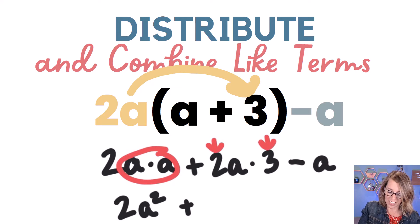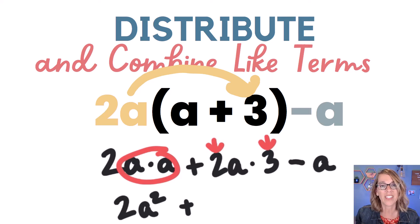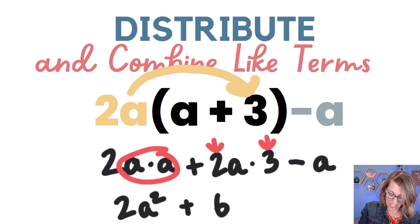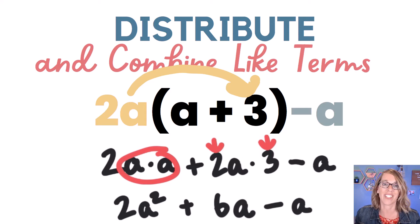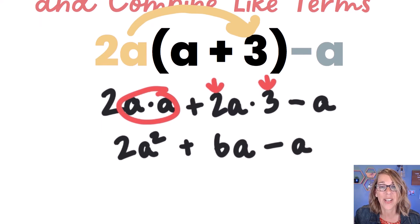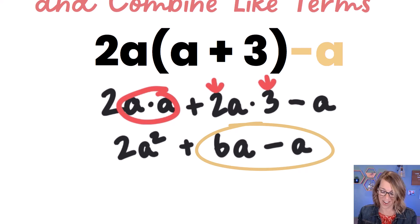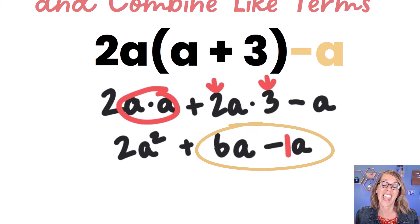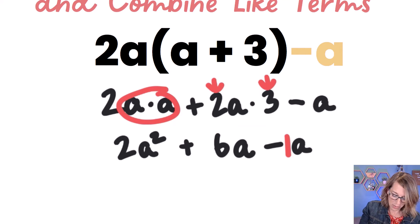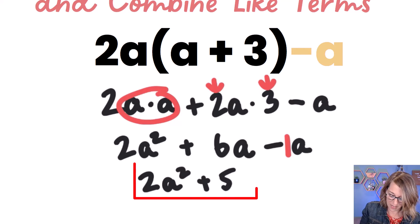In the next term I've got a two and a three, so I'm going to multiply the two times the three together — just moving things around so the same kind of values are next to each other. So two times three is six, and I've got the a there as well, and then the minus a on the outside. Now that I'm done distributing, let's combine like terms. I've got six a and I want to subtract one a — six minus one tells me I've got five a's left. So that gives me my simplified answer of two a squared plus five a.